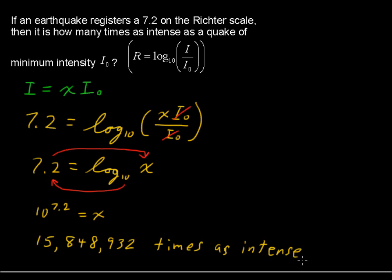As the minimum quake, denoted as I₀. Almost 16 million times.